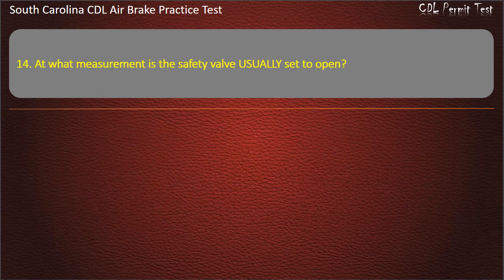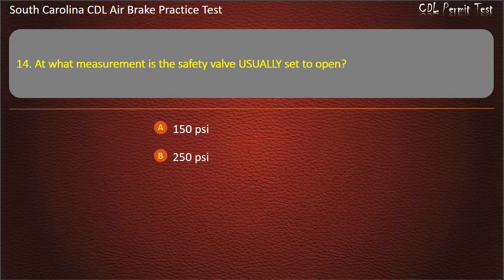Question 14: At what measurement is the safety valve usually set to open? 150 lbs per square inch, 250 lbs per square inch, or 200 lbs per square inch. Answer: 150 pounds per square inch.